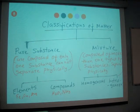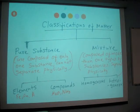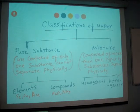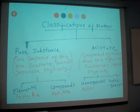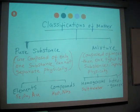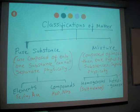For elements, they are pure substances. Now we're going to talk about homogeneous mixtures. A homogeneous mixture — for example, salt plus water — you can make a clear solution. It is uniform throughout. That's a homogeneous mixture.